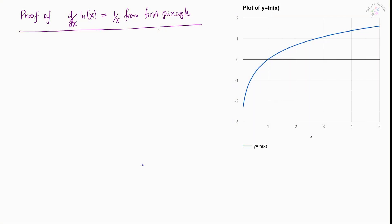Hey guys, welcome back. In this video we are going to prove this wonderful result, which is the derivative of ln(x) equals 1 over x. Here ln(x) is the natural log of x, which means it is a logarithm that has the base of e. So all the natural log will have the base of e.